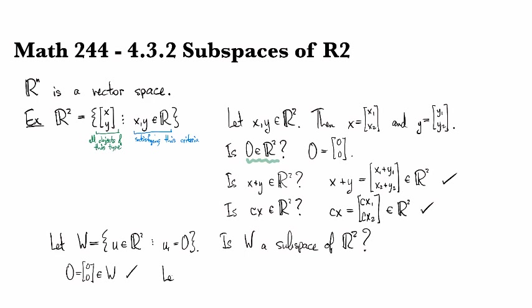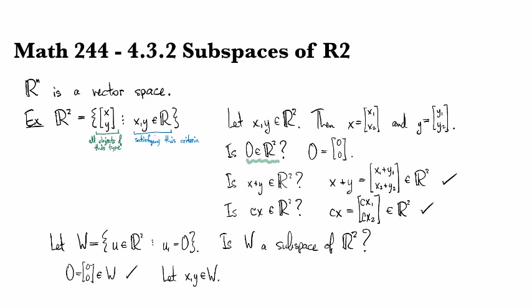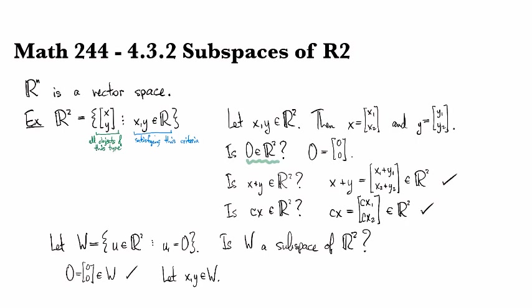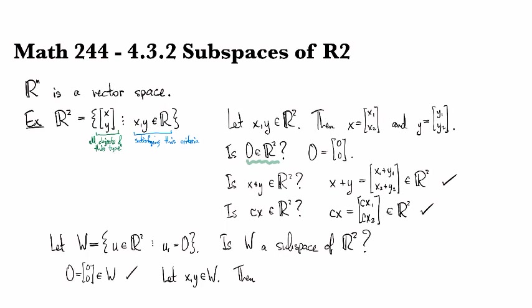Then we say, okay, so suppose we take two things from w. Then we write down what that means. So then, so when you say write down what that means, that means look at this criterion that they have to satisfy.